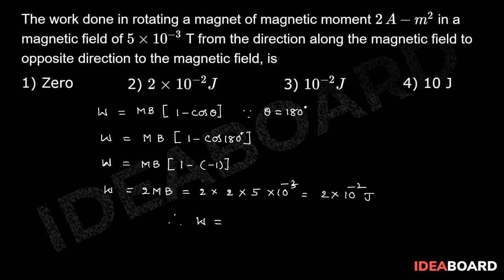Therefore work done W is equal to 2 into 10 power minus 2 joules. So second option is the right option.